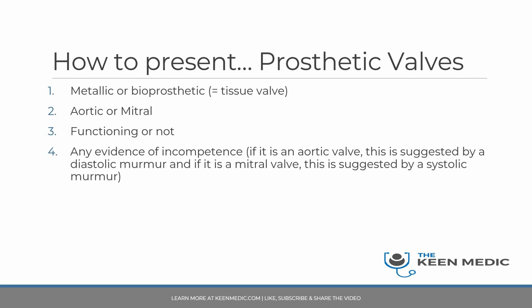There is something called a flow murmur with valves, and this should not be confused with incompetence. Flow murmurs occur when blood flows through the valve in the natural, expected direction. For example, with the aortic valve, in systole the left ventricle contracts and pushes blood through the aortic valve towards the aorta — this produces a systolic flow murmur, which is expected and not a concern. You may hear flow murmurs in patients with bioprosthetic or metallic valves, and you should comment on this if you do hear it.